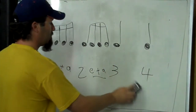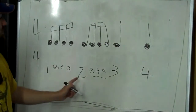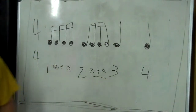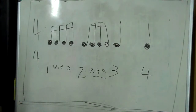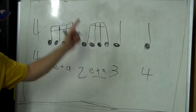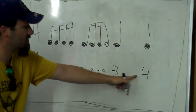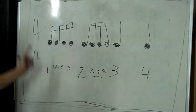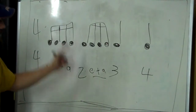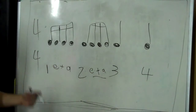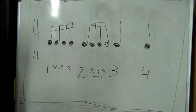So this would be one, E, and a. Two, E, and a. Three, four. Let's play that. One, two, ready, go. One, E, and a. Two, E, and a. Three, four. So you've got to stop here — you've got to stop your hands. Let's do it again. Ready, go. One, E, and a. Two, E, and a. Three, four. One more time without me helping you. Ready, go.